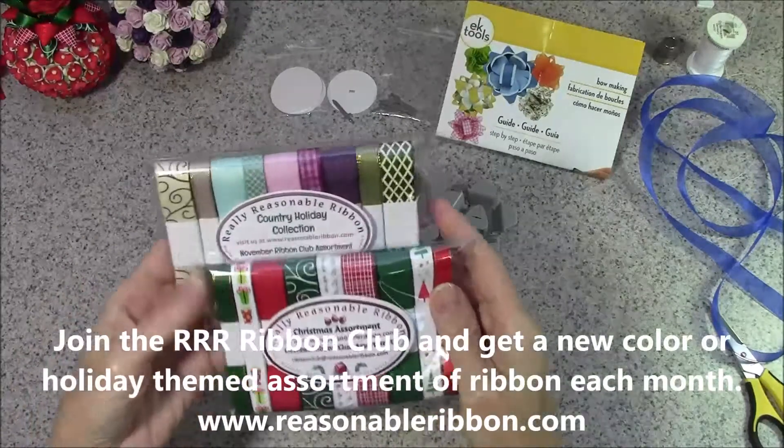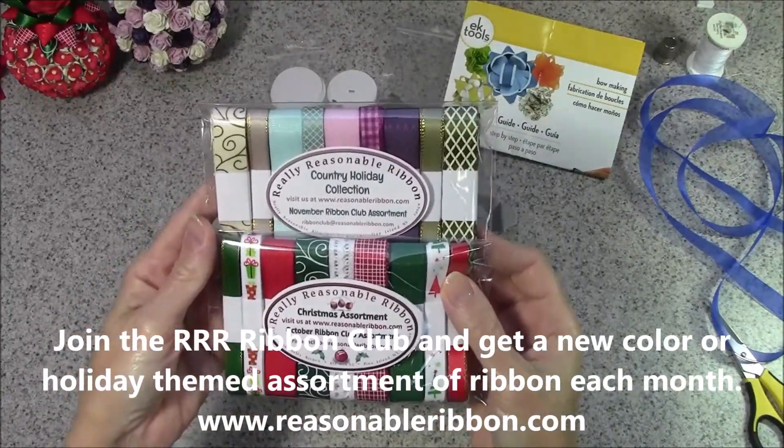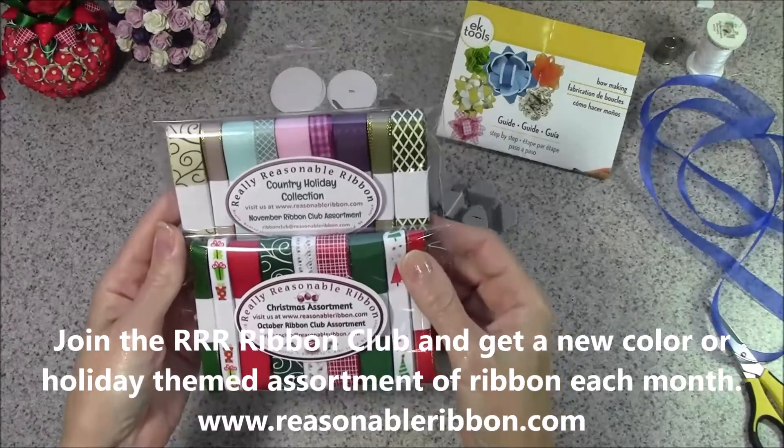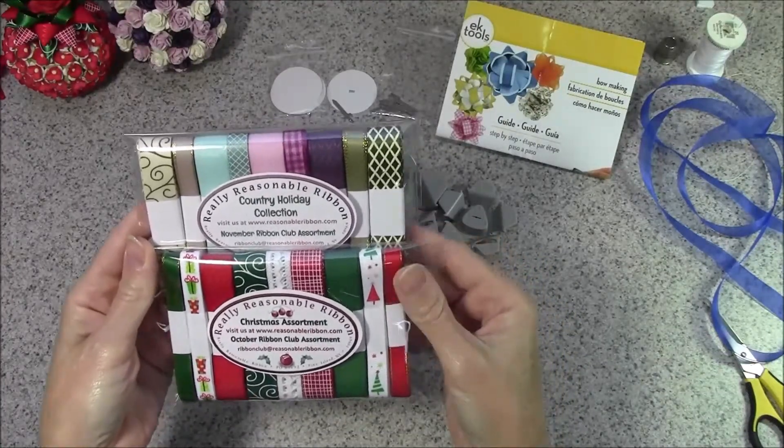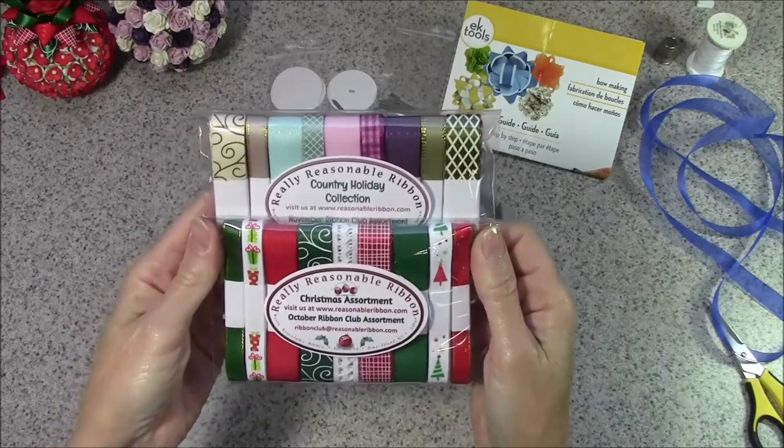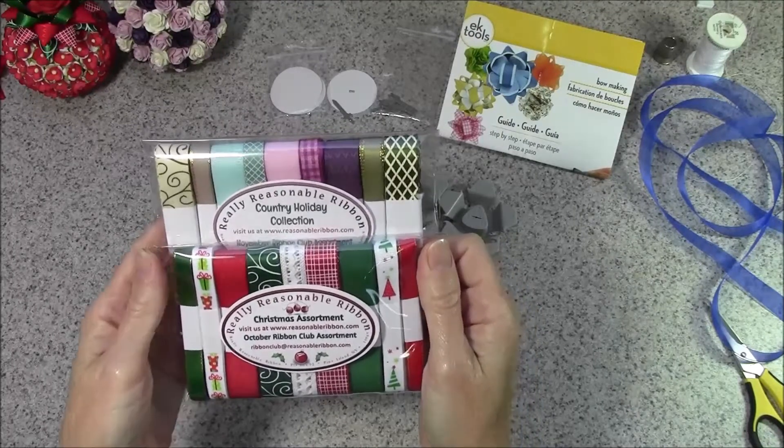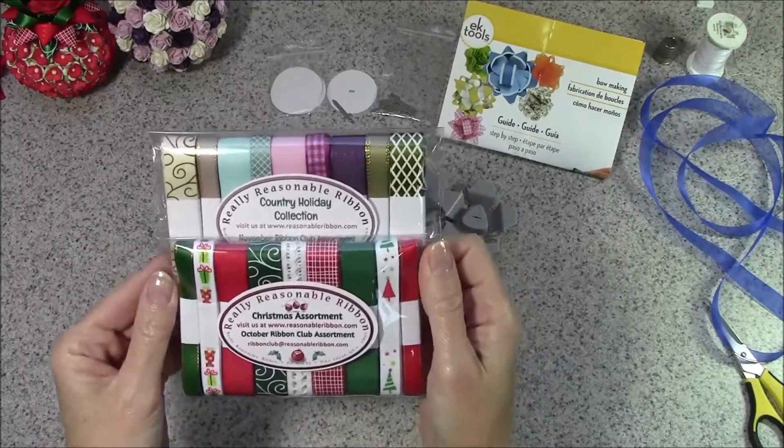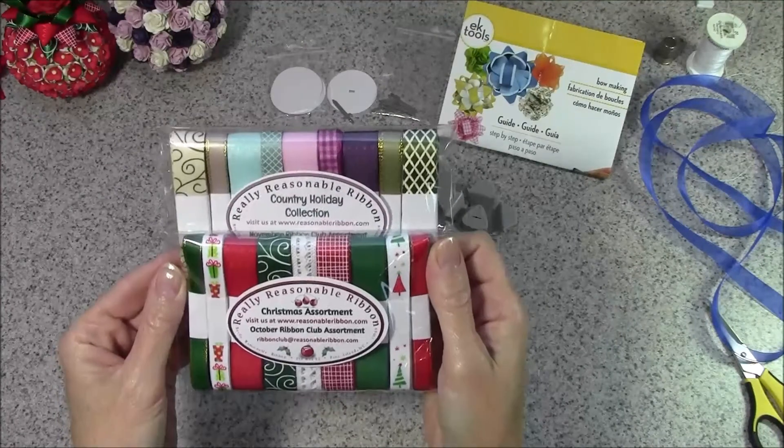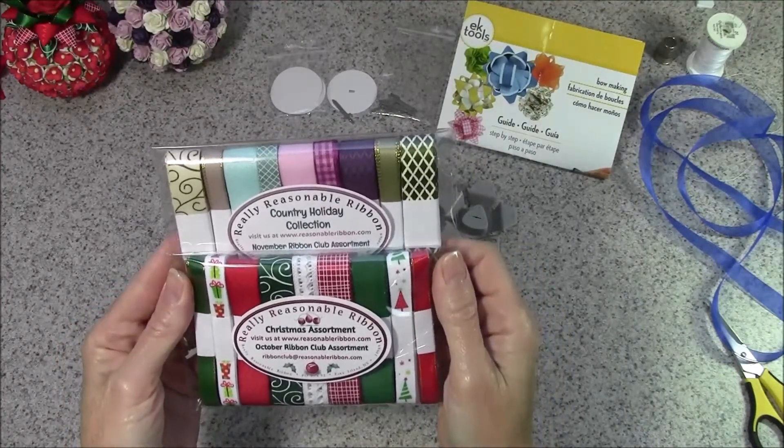I've been working with the October and November ribbon club assortments this month. If you're not familiar with our ribbon club, once you enroll you get a new assortment shipped automatically each month. Each assortment is color or holiday themed and typically has eight or nine styles and anywhere from 16 to 18 yards of ribbon, so it's really a fun way to build your ribbon stash and try new ribbon styles.